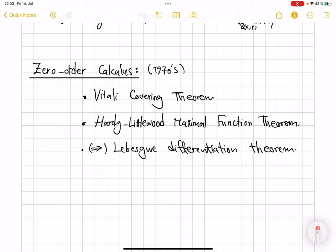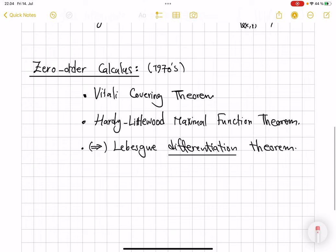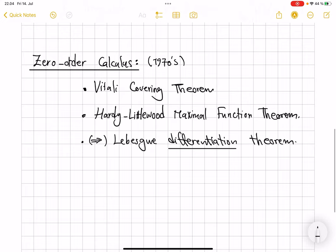The Hardy-Littlewood maximal function theorem, the one that we will talk about next in this video extensively, and from which, in the follow-up video, I will show how the Lebesgue differentiation theorem follows. And this Lebesgue differentiation theorem actually has nothing to do with derivatives, interestingly. The terminology is more when you differentiate one measure with respect to another measure. So these are the type of big results that do not require or involve any derivatives. And these are used very extensively in developing first-order calculus on the spaces.